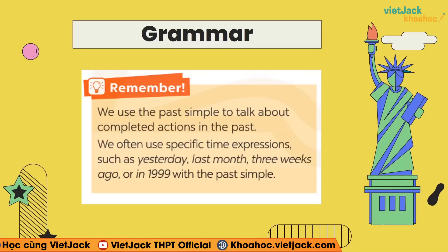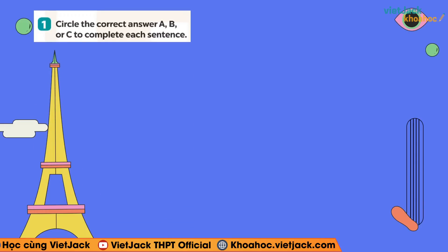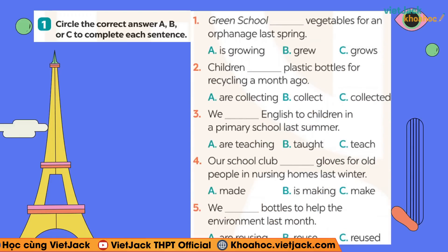Bởi vì dựa vào 2 cái phần này, các bạn có thể làm được những bài tập sau đây. Đầu tiên, mình có Activity number 1: Circle the correct answers to complete each sentence — các bạn sẽ chọn đáp án đúng nhé. Tuy nhiên, trước khi chọn đáp án đúng, cô yêu cầu các bạn hãy gạch chân cho cô dấu hiệu nhận biết thì quá khứ đơn ở trong bài này.